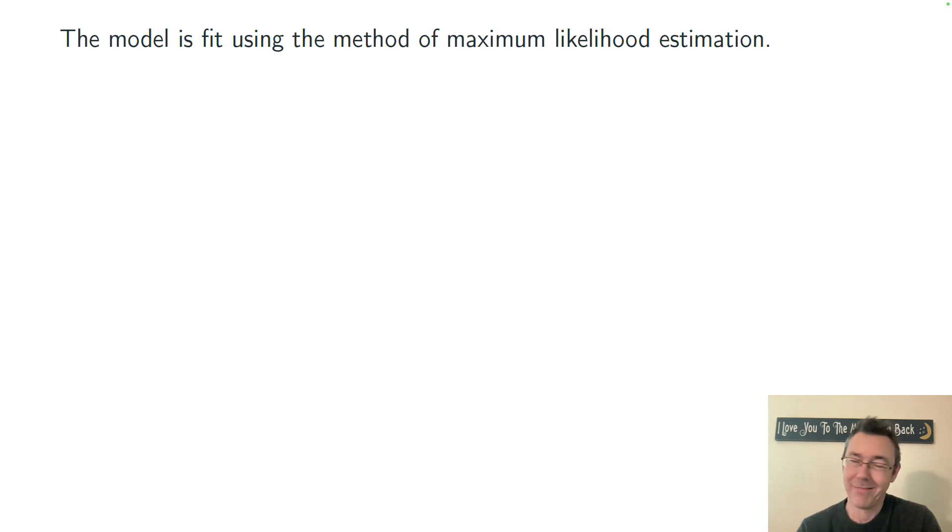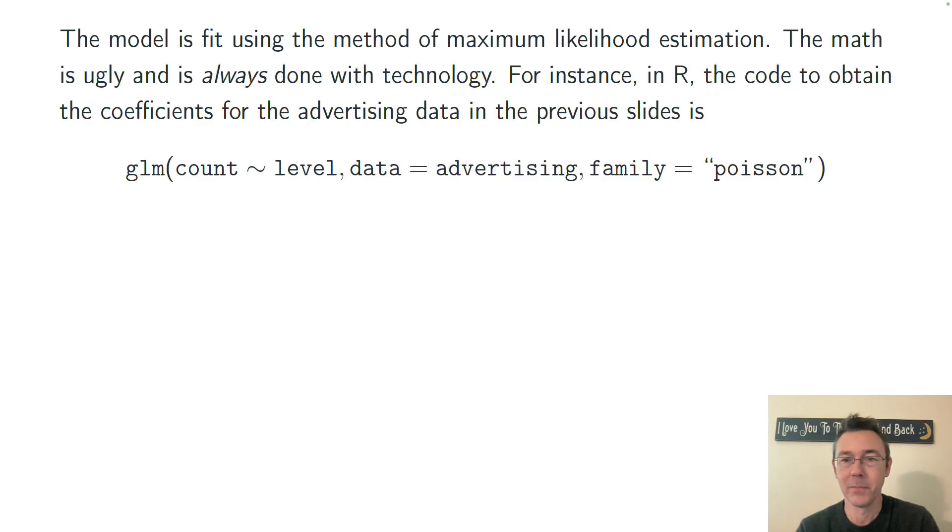The model is fit, as always, using maximum likelihood estimation. The math is ugly and is always done with technology. In R, the code to obtain coefficients beta 0 and beta 1, or at least to obtain their estimators, is this: glm(count ~ level, data = advertising, family = "poisson"). This code is really familiar if you know how to do logistic regression in R.